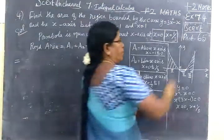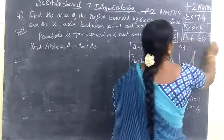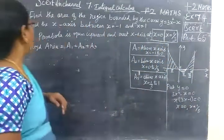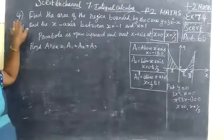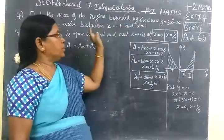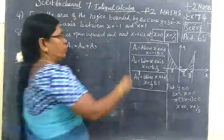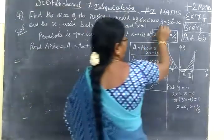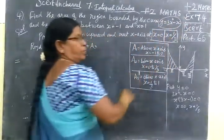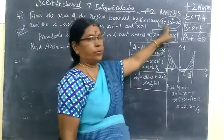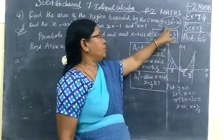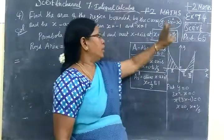Now we see part 65, section 7.4, 4th sum. Find the area of the region bounded by the curve y equal to 3x squared minus x. This is the parabola.